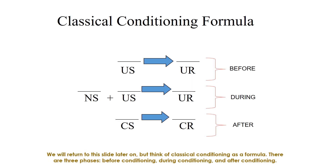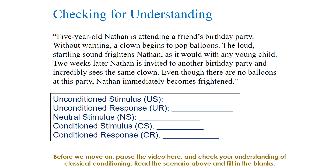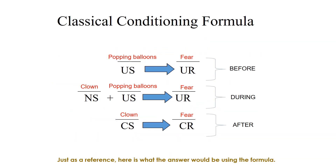Think of classical conditioning as a formula with three phases: before conditioning, during conditioning, and after conditioning. Here is what the formula looks like filled in with our first scenario about kissing. Pause the video here and check your understanding — read the scenario and fill in the blanks. When problem solving, always ask yourself: what would naturally cause a response, and what is being associated with that response?